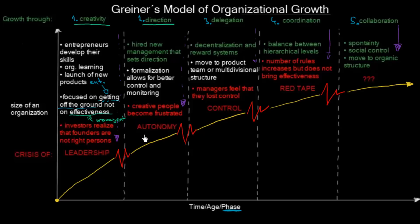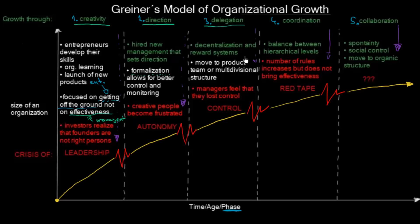However, we are getting to the crisis of autonomy because the creative people become frustrated. In the first phase, we were growing thanks to creativity, and now these people who were pushing us forward become really frustrated because there is new management telling them they have to formalize and be more professional. That is the crisis of autonomy, which can be solved in the third phase, where we are growing through delegation.